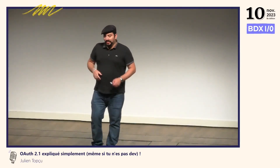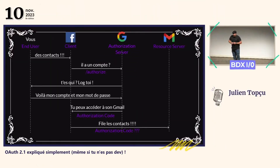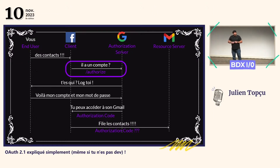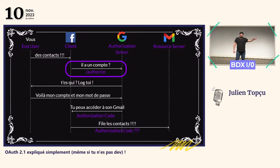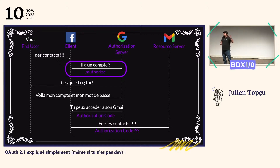À quel moment ça se passe dans la vie réelle ? C'est au moment où Facebook vous redirige sur Google. Il faut savoir qu'une redirection, c'est un truc un peu particulier. Quand vous faites une redirection, il n'y a jamais de communication directe entre Facebook et Google. Facebook envoie un ordre à votre navigateur pour rediriger l'utilisateur sur le site de Google, et le navigateur vous redirige sur Google. Ce qui fait que Google ne sait pas d'où vous venez, il ne sait pas que vous étiez sur le site de Facebook.